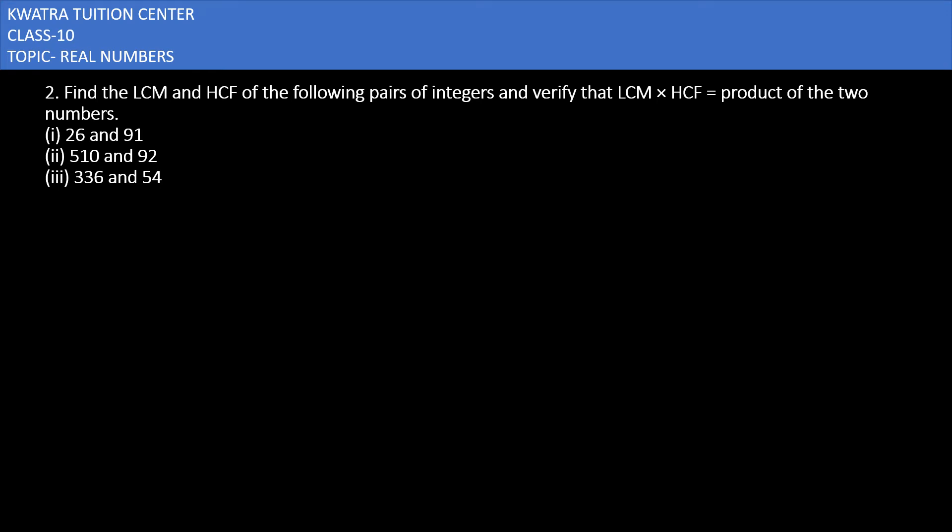Let's start with question number two. It says find the LCM and HCF of the following pairs of integers and verify that LCM × HCF equals product of two numbers. So first we have to find the LCM and HCF.